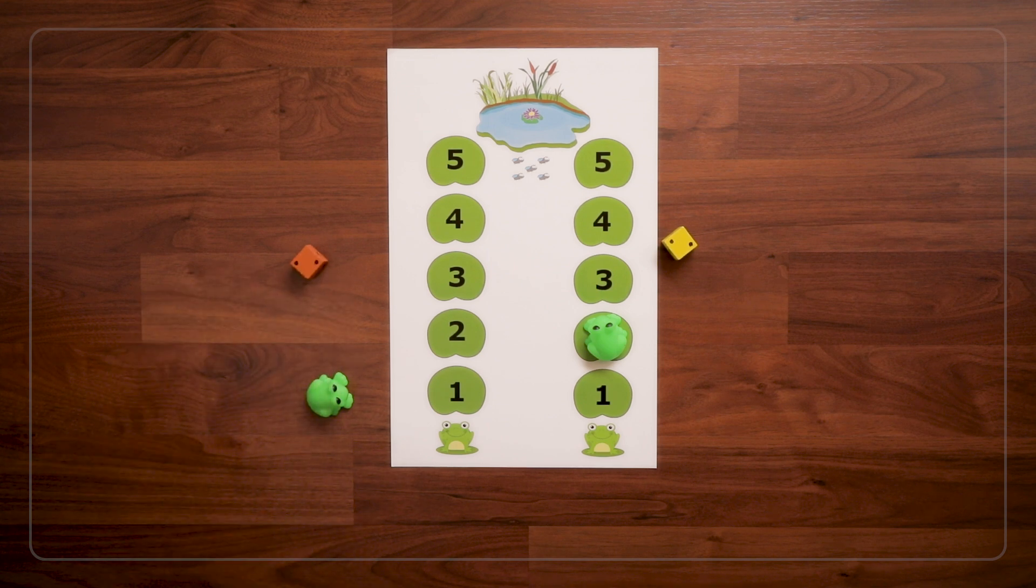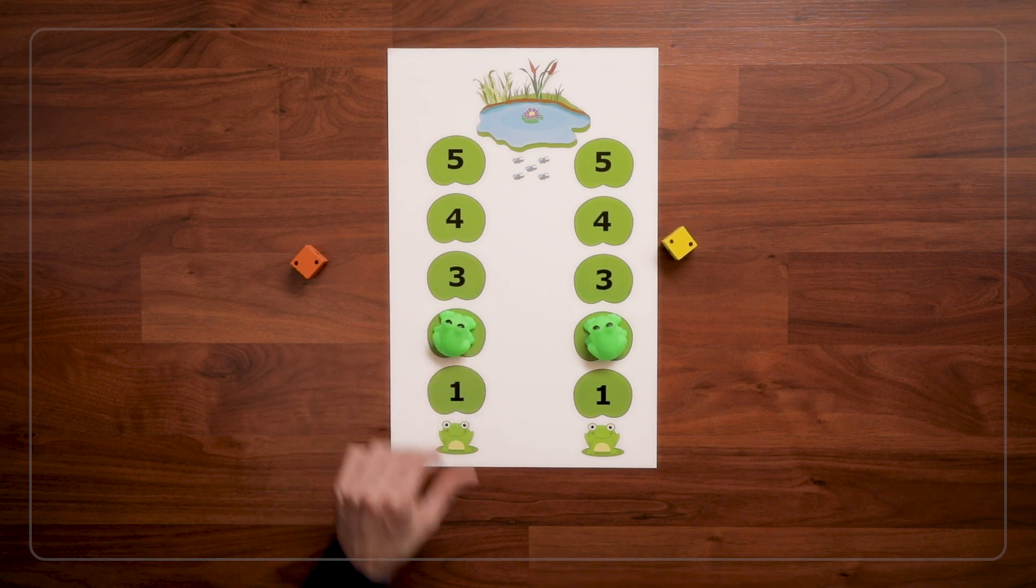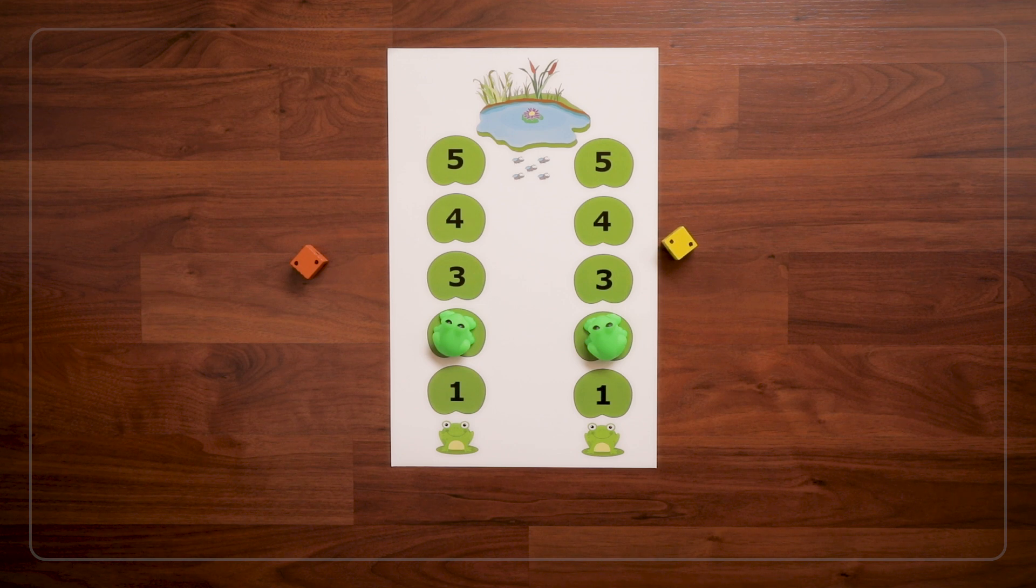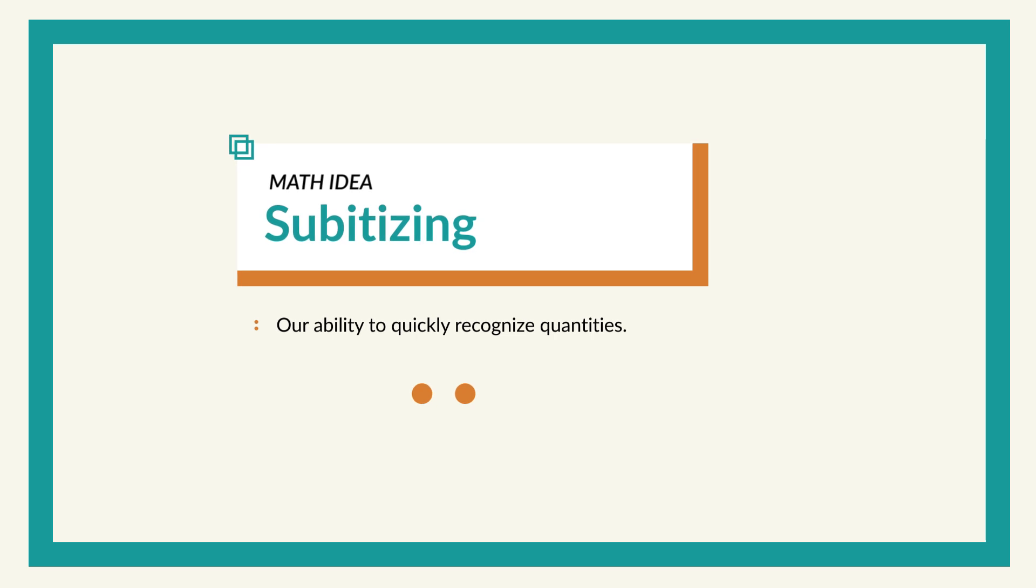They roll, and they get a 2. And get to jump 1, 2. When kids roll the die and recognize the number of dots they rolled, they are practicing a skill called subitizing. Subitizing is our ability to quickly recognize quantities.